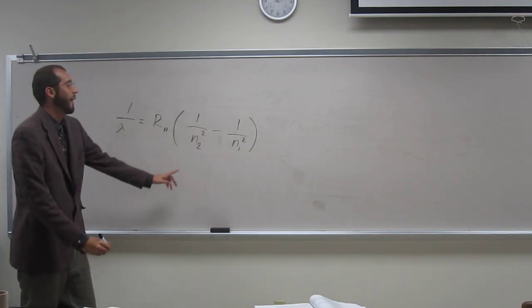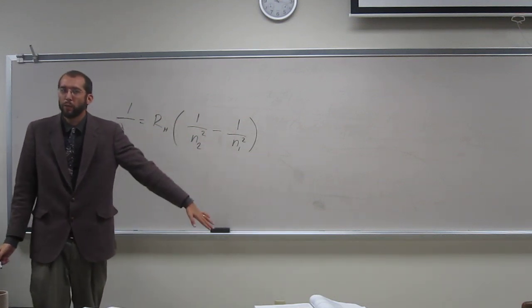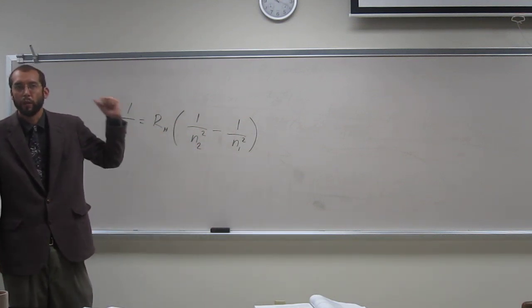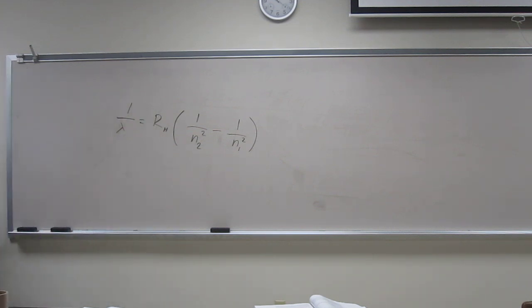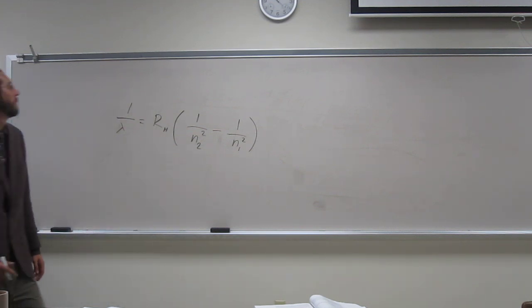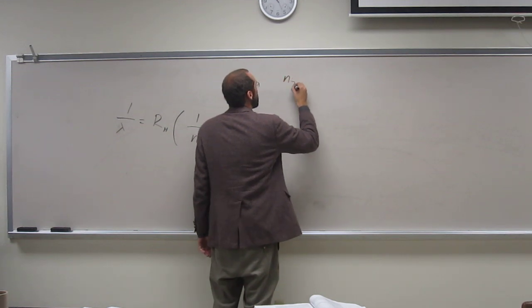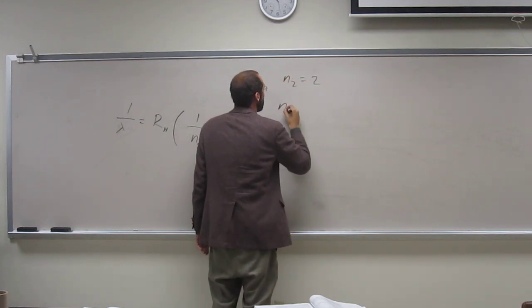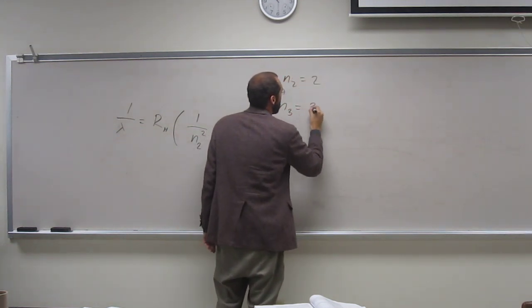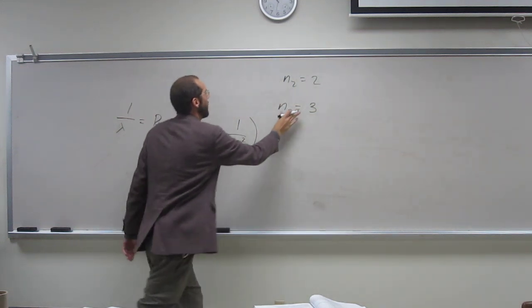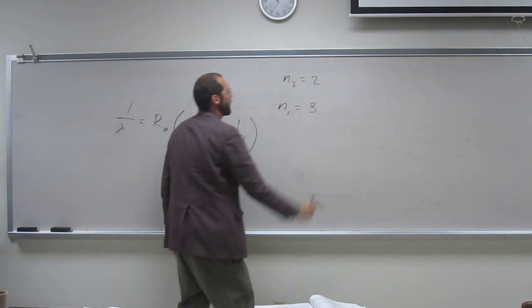Okay, n2, remember, is the final one. n1 is the initial one. So, where does it go? It goes from 3 to 2. So, n2 equals 2, and n1 equals 3.